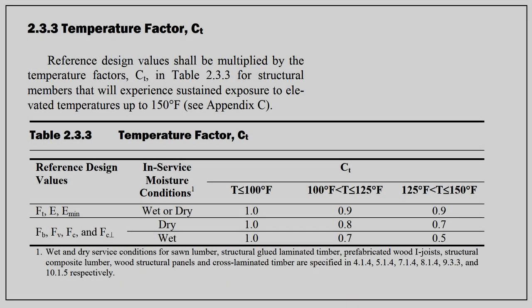Now, as you can see from Table 2.3.3, if you do have such a case, then you will have to apply the appropriate factor, which varies with the type of reference value — i.e., tensile stress, elastic modulus, etc. — you're going to be considering, and also the actual temperature that will be sustained, as well as the moisture content. If you remember back to the beginning of this video, we talked about how the higher the moisture content, the more susceptible wood is to temperature-induced damage — so that's why that provision exists. But note, the factor doesn't vary based on species or lumber size, unlike the wet service factor that we saw in the previous video. So at least in this case, it's a relatively straightforward factor to apply.